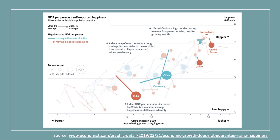This is a chart from The Economist — I'll put a link in the comments page of the video. It basically shows the direction of travel for per capita income — GDP per person on the x-axis, purchasing power parity — and reported happiness on the y-axis. You can see, for example, that the United States has actually got a little poorer and reported happiness is falling. In Venezuela, with the collapse of the economy, there has been a huge dramatic fall in reported life satisfaction.